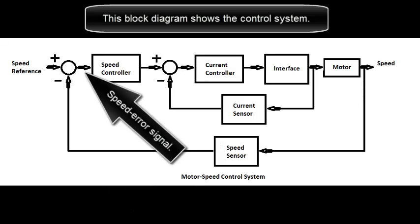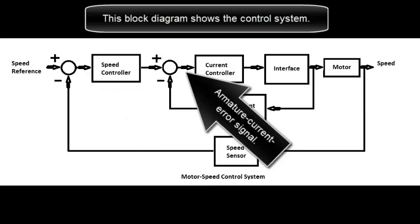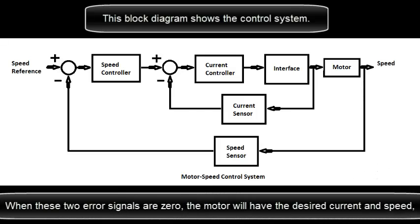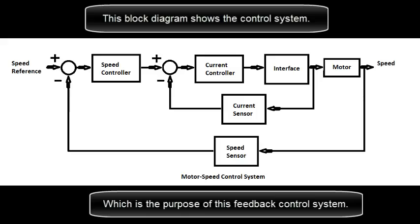That's the speed error signal and the armature current error signal. When these two error signals are zero, the motor will have the desired current and speed, which is the purpose of this feedback control system.